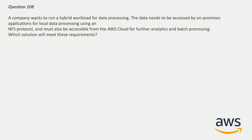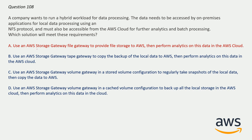Question number 108: A company wants to run a hybrid workload for data processing. The data needs to be accessed by on-premises applications using the NFS protocol and must also be accessible from AWS cloud for analytics and batch processing. The correct answer is option A: Use AWS Storage Gateway file gateway to provide file storage to AWS, then perform analytics on the data in AWS cloud. This is correct because Storage Gateway volume gateway uses iSCSI, while Storage Gateway file gateway uses NFS. Since NFS is the requirement, we use option A and eliminate the volume gateway option.